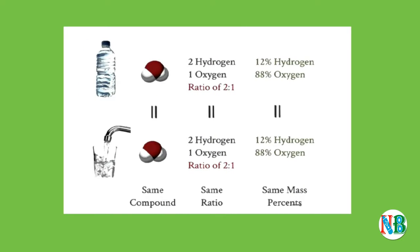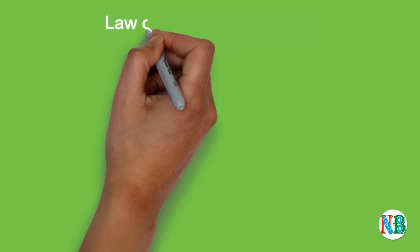For example, let's take bottle water and tap water. On comparing both, there is same compound, same ratio of 2:1, and same mass percents. Thus proves the law of definite proportions.